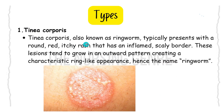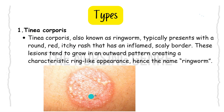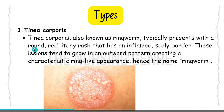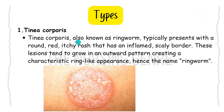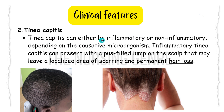Tinea corporis, also known as ringworm, typically presents with a round, red, itchy rash that has an inflamed scaly border. These lesions tend to grow outward, creating a characteristic ring-like appearance — hence the name ringworm. It is round in shape, red in color, causes itching, and has a defined inflamed scaly border.